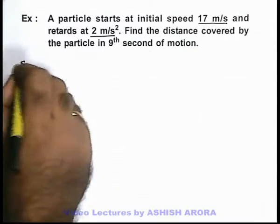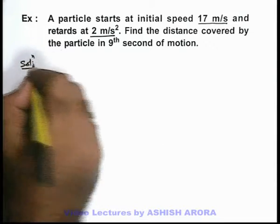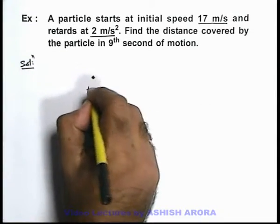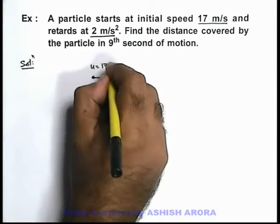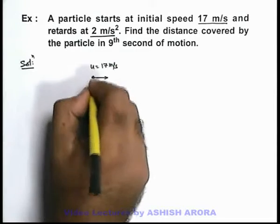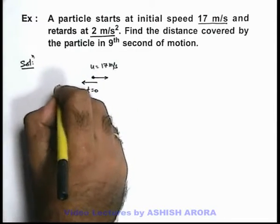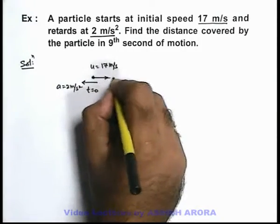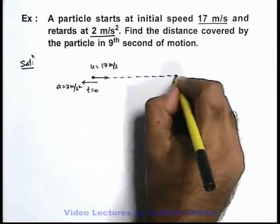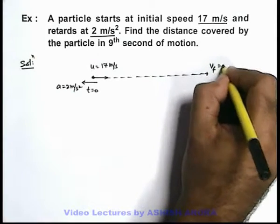Let's draw the physical situation. We have a particle, at t equals zero it starts with an initial speed of 17 meters per second and is retarded with an opposite acceleration of 2 meters per second squared. Gradually its speed will decrease and after some time its final velocity will become zero.